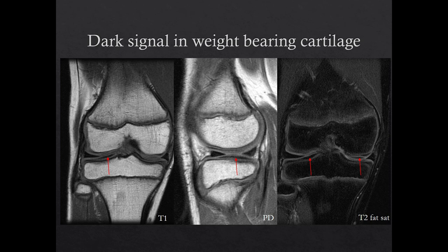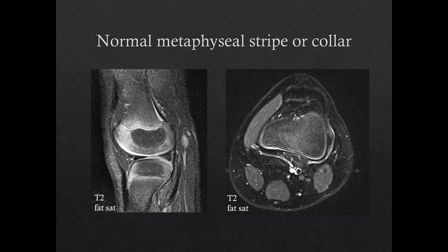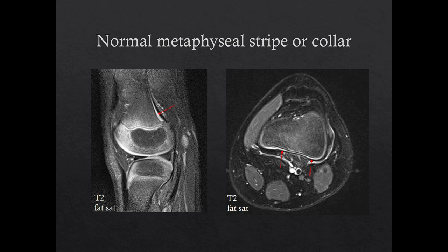Another normal variant is occasionally seen within the cartilage of weight-bearing joints in children, such as in this knee. Here you can see a dark band of low signal intensity, which can be seen on all sequences. This may be due to displacement of water in the weight-bearing portions of the cartilage. The periosteum is normally loosely attached to the long bones in skeletally immature children, except at the physis, where it is continuous with the perichondrium and is more tightly attached. The loose attachment of the periosteum explains why children develop subperiosteal collections, such as subperiosteal abscesses with osteomyelitis or subperiosteal hemorrhages after trauma. However, there is a normal layer of fibrovascular tissue between the periosteum and the bony cortex of the metaphysis, which demonstrates high signal on T2 and enhances after gadolinium. This is referred to as the metaphyseal stripe on sagittal images or the metaphyseal collar on axial images, and disappears after physeal fusion.